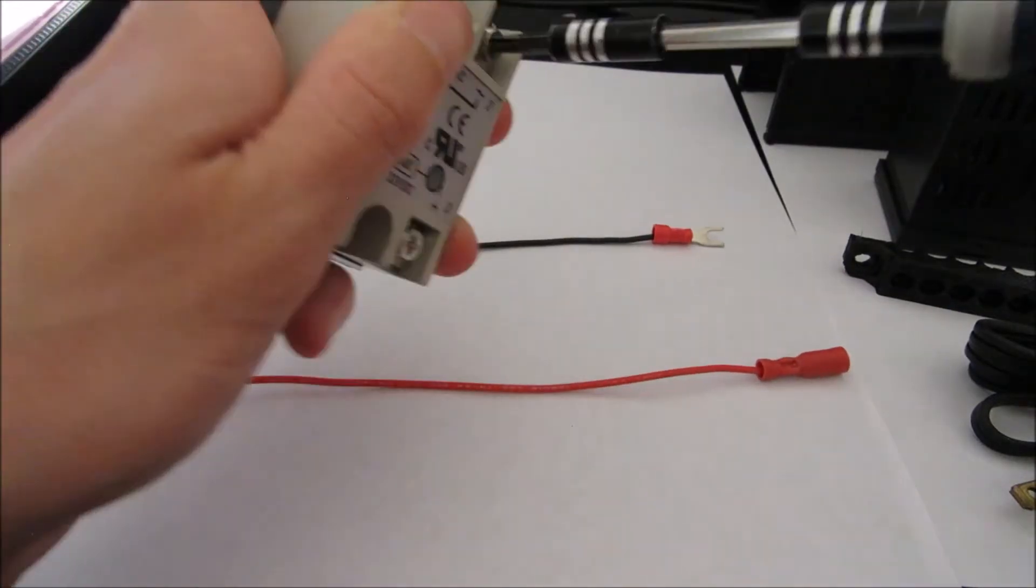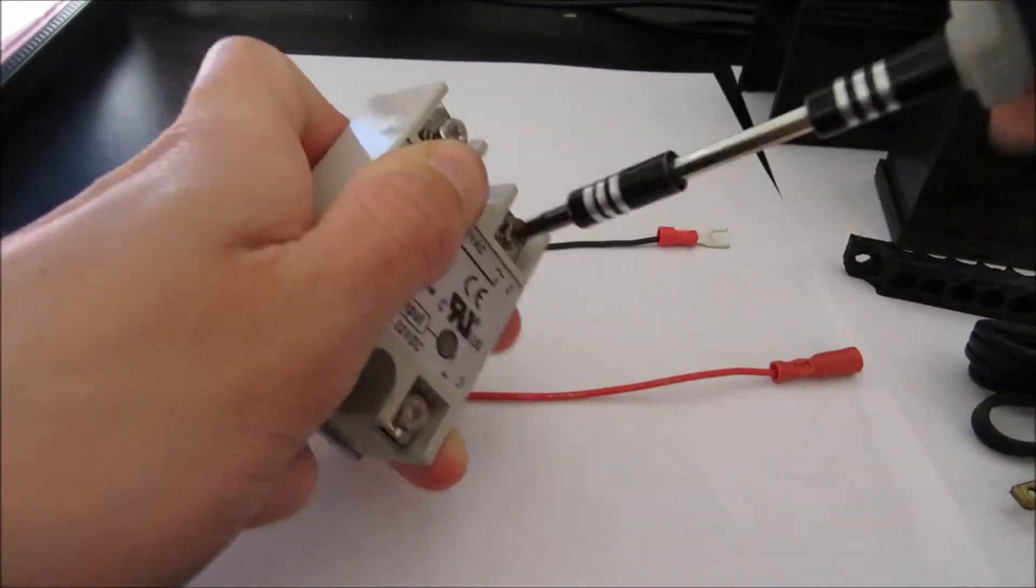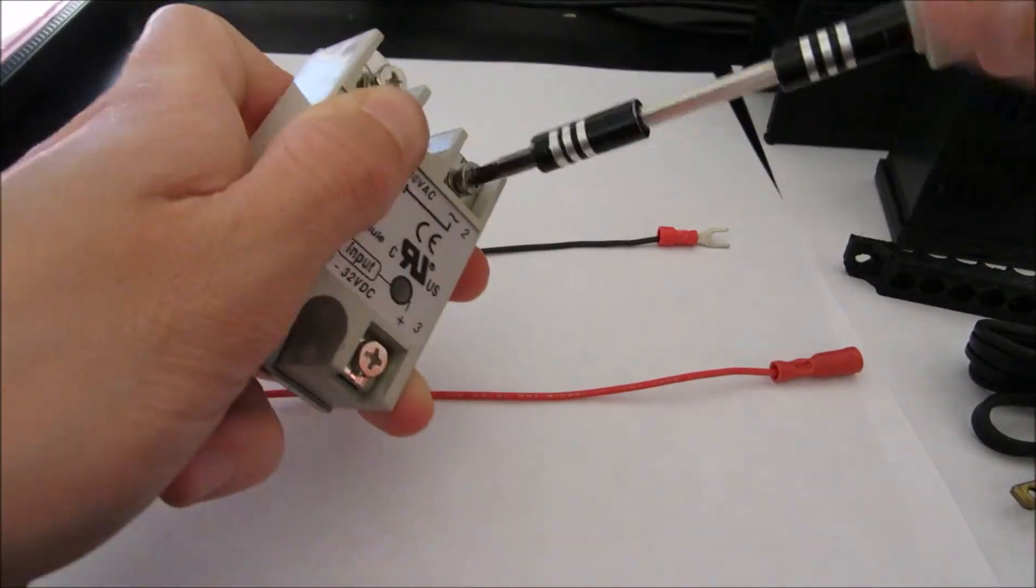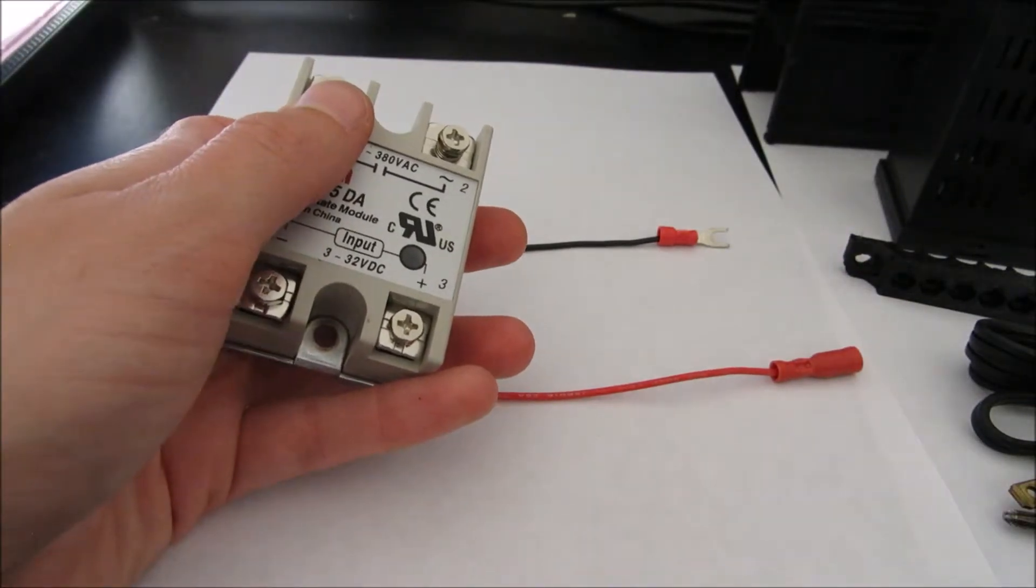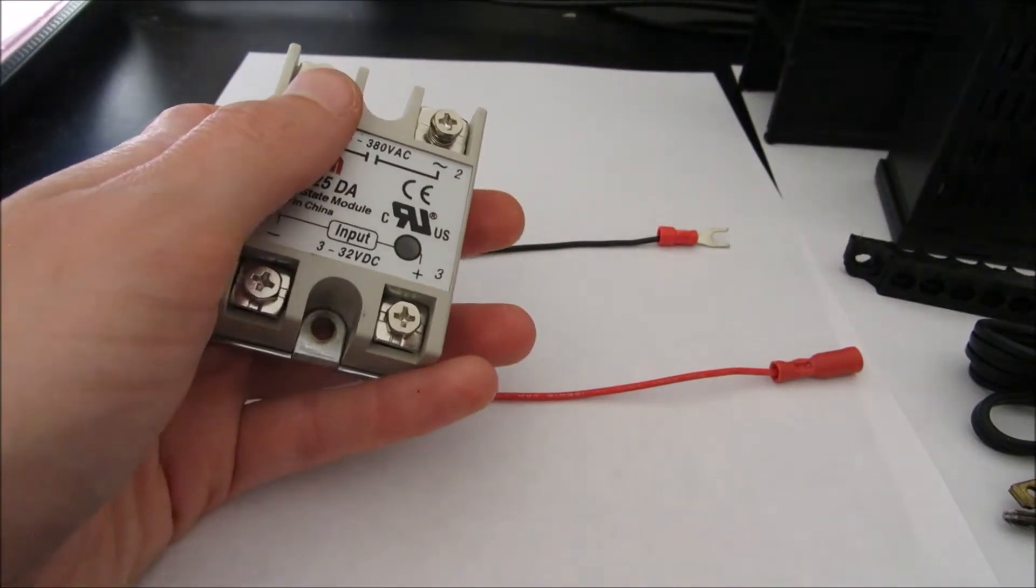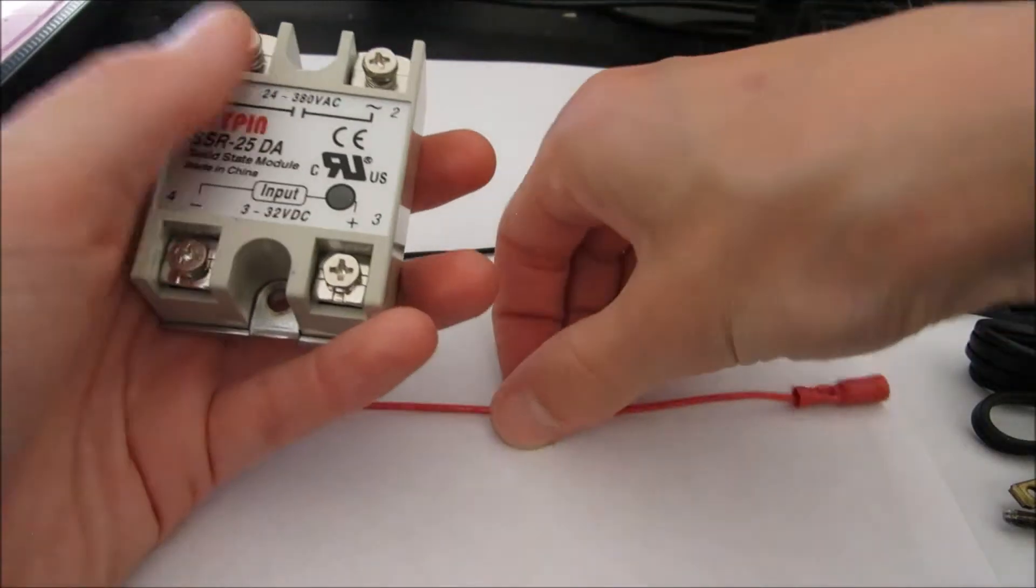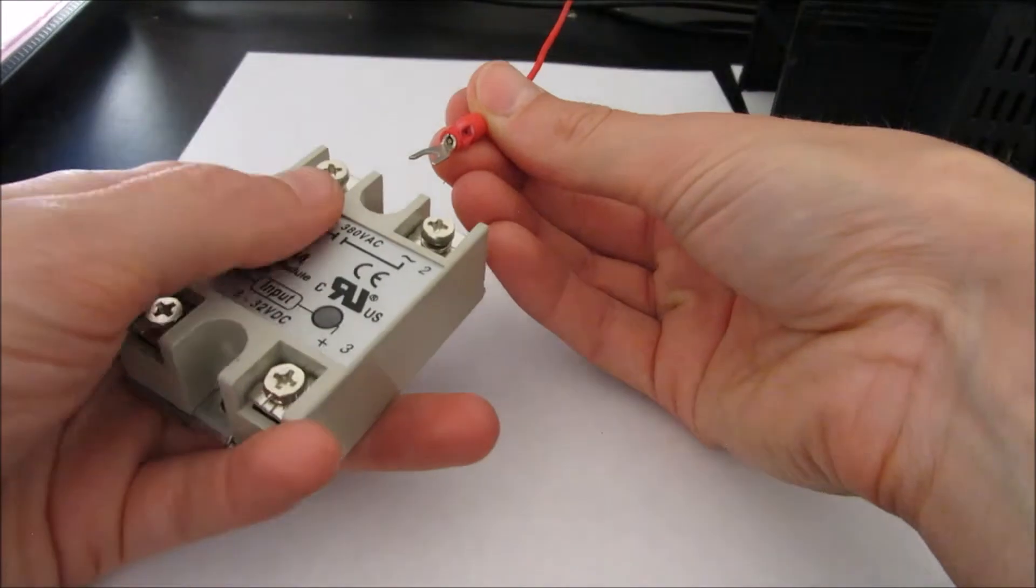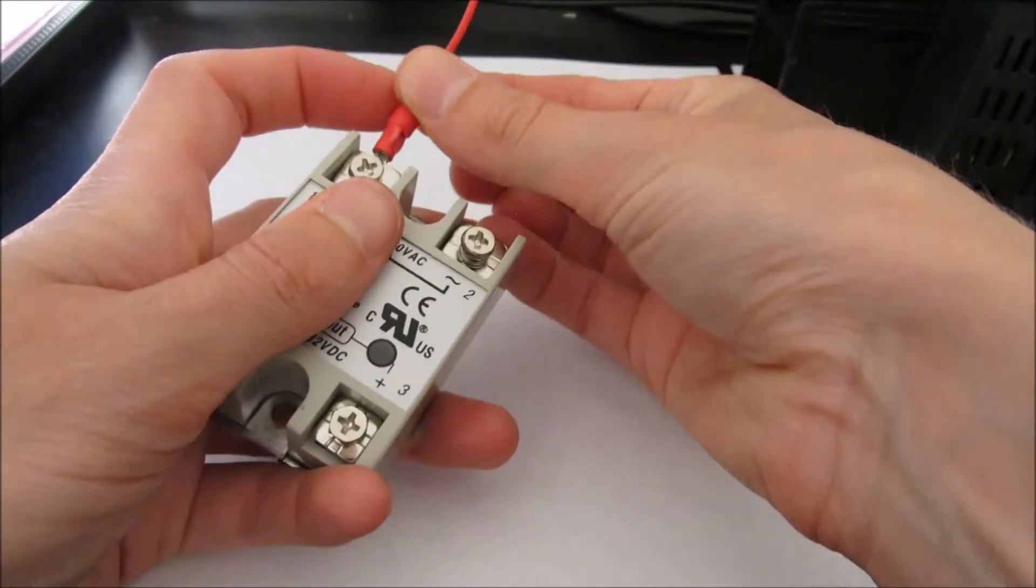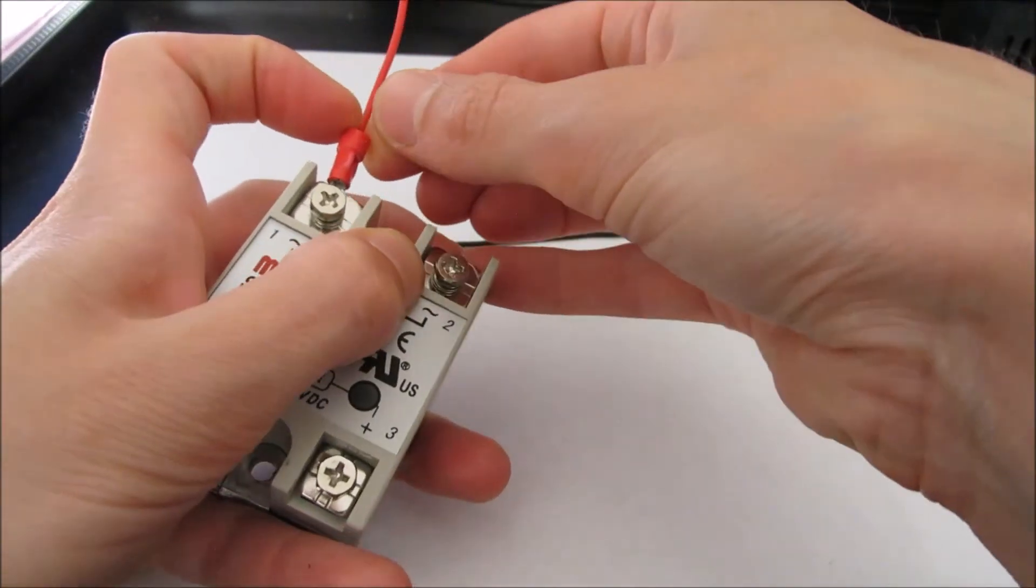And so those will be loose. And we will put into number one the red. So I like to put the wire part facing upward. So slide that on in, in between the screw and the plate.